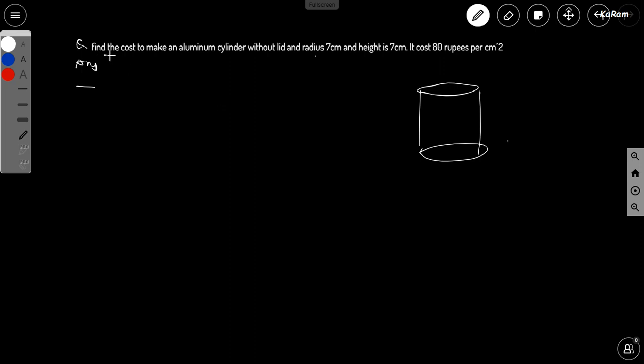So guys, today's question is find the cost to make an aluminum cylinder without lid. The radius and height is 7 centimeter and it costs 80 rupees per centimeter square. So we need to find the curved surface area.